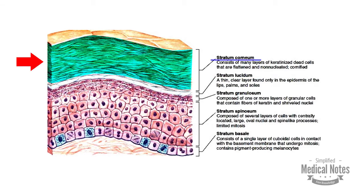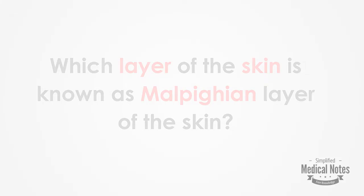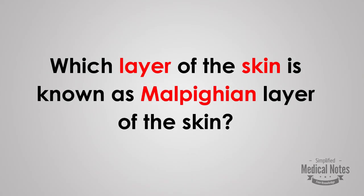The final layer is the stratum corneum. This is the outermost layer of the epidermis. It contains 15 to 20 layers of dead, keratin-filled cells with no nuclei and cell organelles. It forms a semi-permeable barrier and is shed continuously.